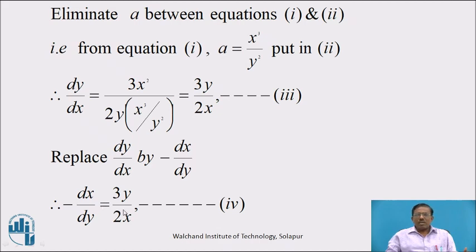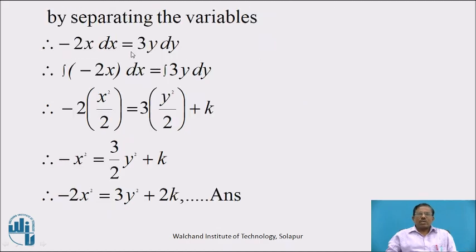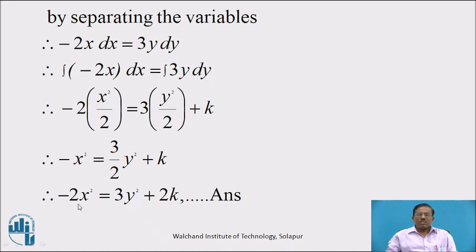Solve equation 4 using the variable separable method. Separating variables: −2x dx = 3y dy. Integrating both sides: −2 · x²/2 = 3 · y²/2 + k. Therefore −x² = 3y²/2 + k. Multiplying by 2: −2x² = 3y² + 2k. This is the required family of curves which is orthogonal to the given family of curves.